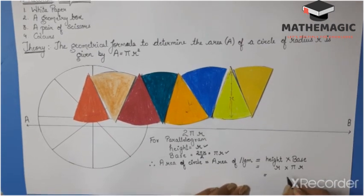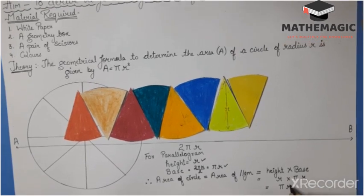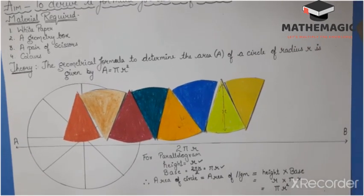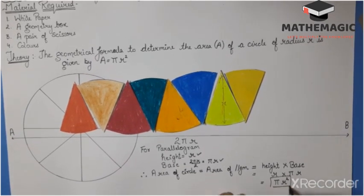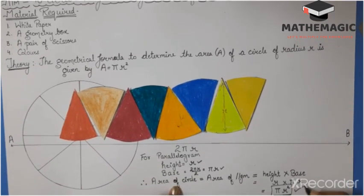After multiplying these two, we will get π, and since there are 2 times r, we will write it as πr². Therefore, the formula for the area of a circle is πr².